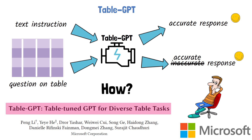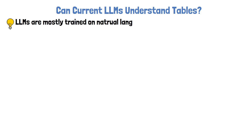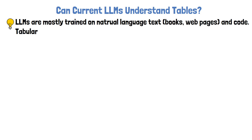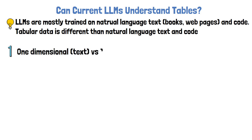In this video we'll explain the paper to understand how TableGPT was created and how it performs compared to other large language models. Let's start with the question of whether current large language models can understand tables. An important observation is that large language models are mostly pre-trained on natural language text from the web, books, and code. Tabular data is different, and LLMs may not be able to reliably read tables. One main difference is that text and code are one-dimensional, while tables are two-dimensional.